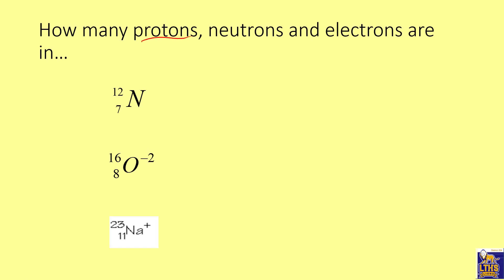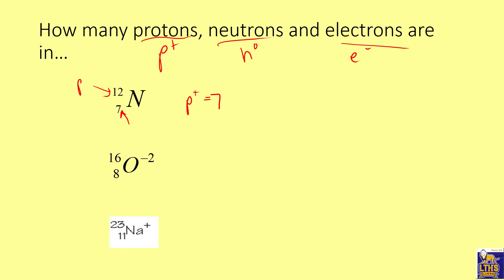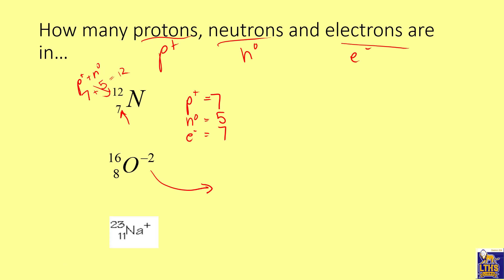To find protons, neutrons, and electrons from an isotope symbol: the bottom number is the atomic number, which gives you protons — so seven protons. The mass number equals protons plus neutrons, so if the mass number is 12 and protons is seven, neutrons equals five. If there's no charge, the atom is neutral and electrons equal protons, so seven electrons.